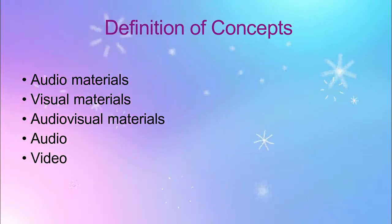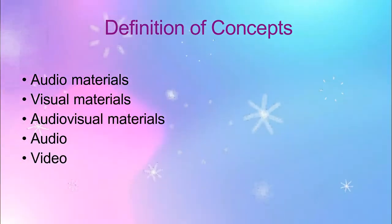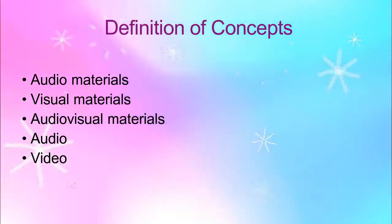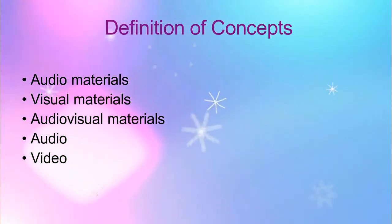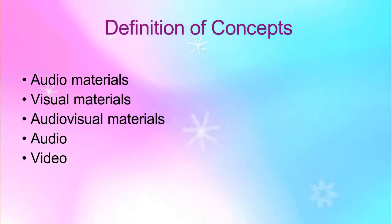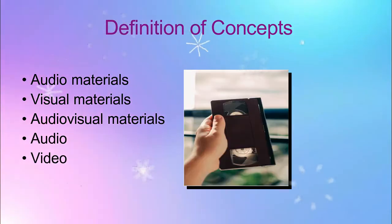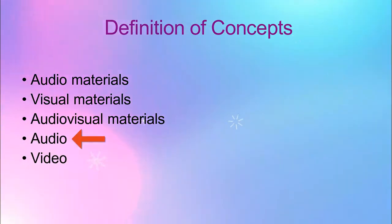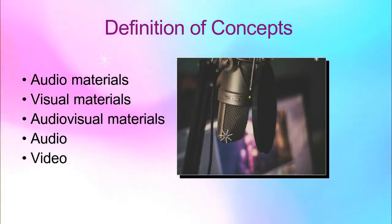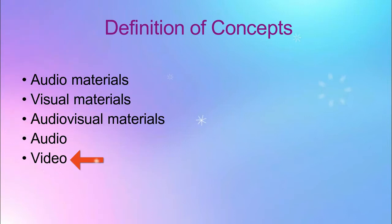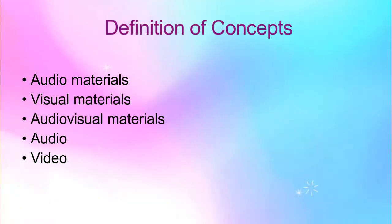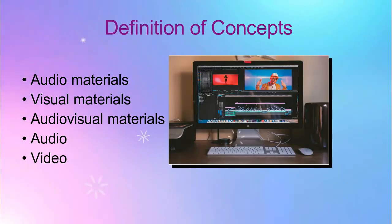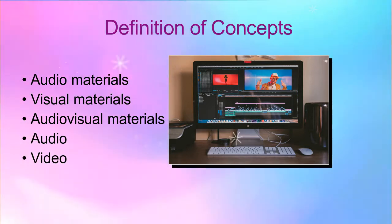Audiovisual materials are things that can be understood by observing visual aspects. Examples are videotapes, DVDs, audio tapes, and audio CDs. Audio is the recording of your voice. And video is being presented on the screen — the recording, copying, and broadcasting of moving visual images.